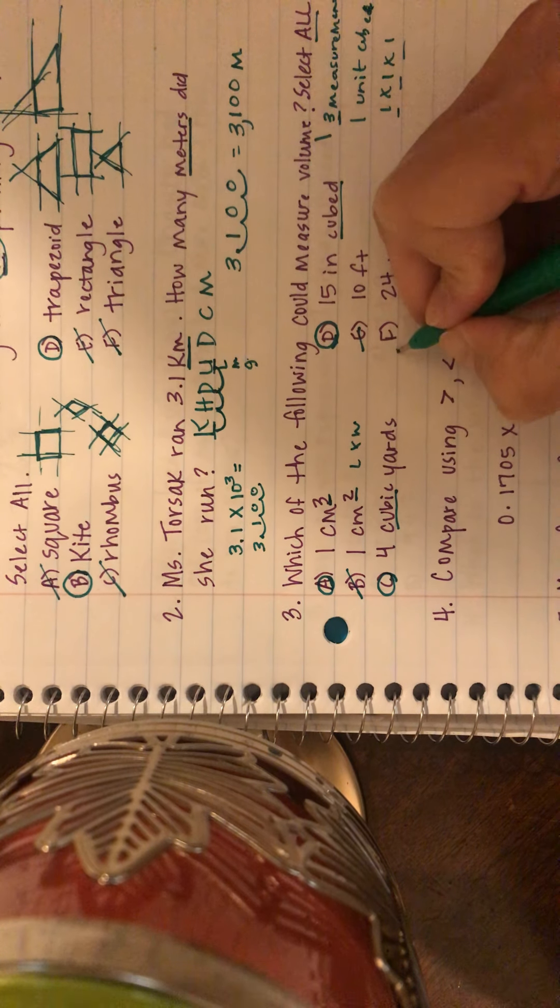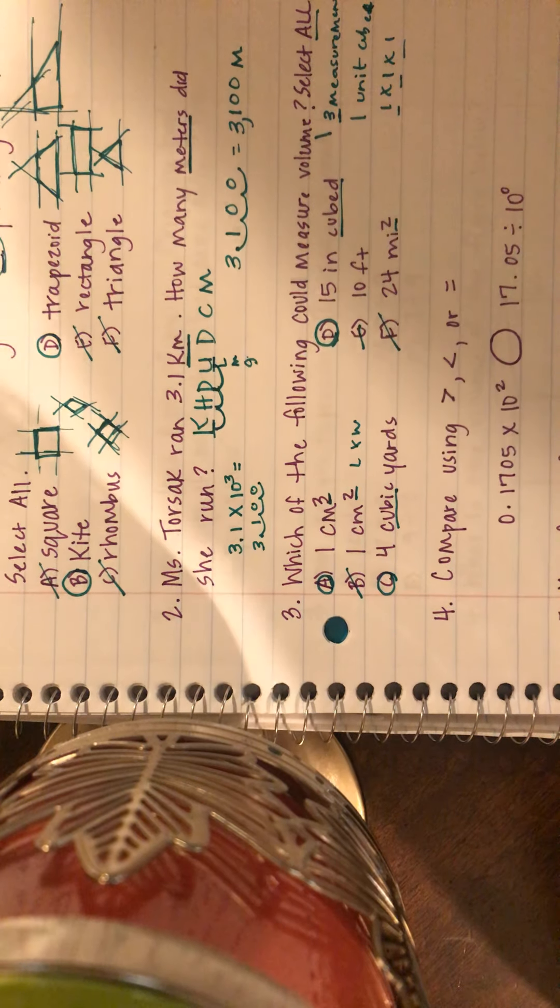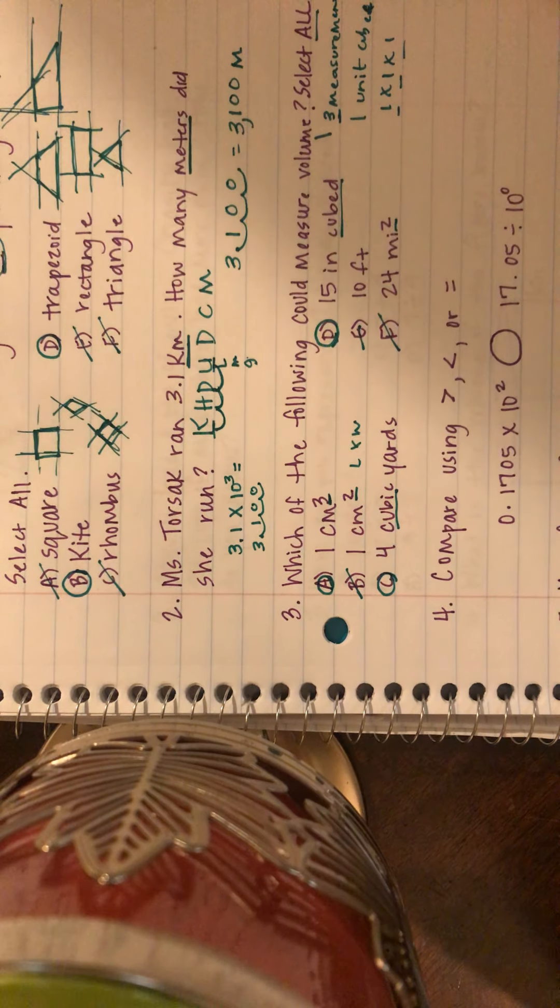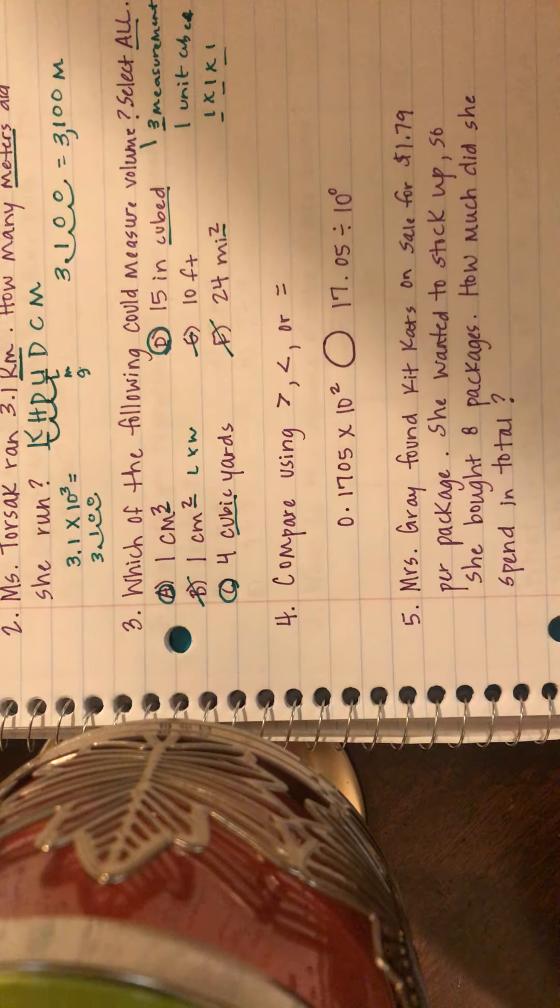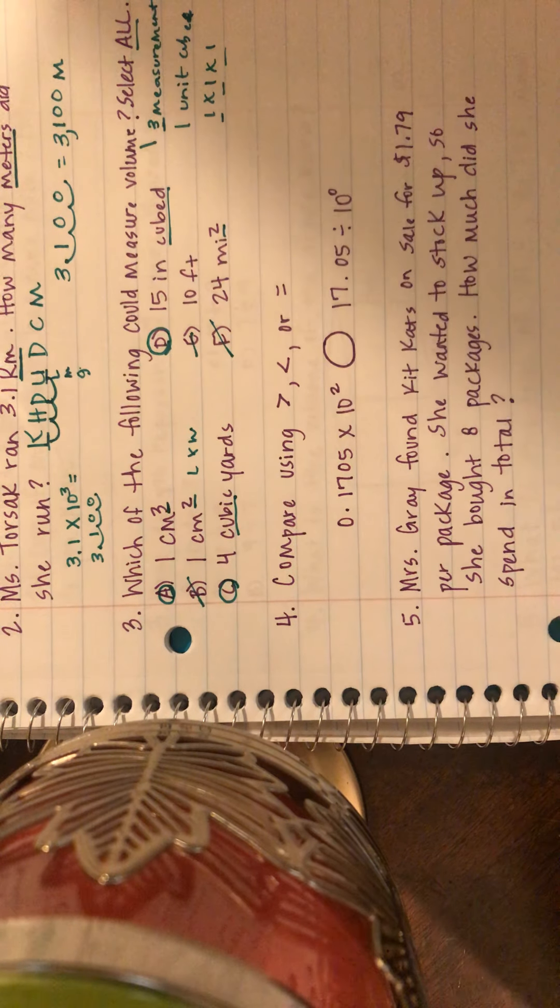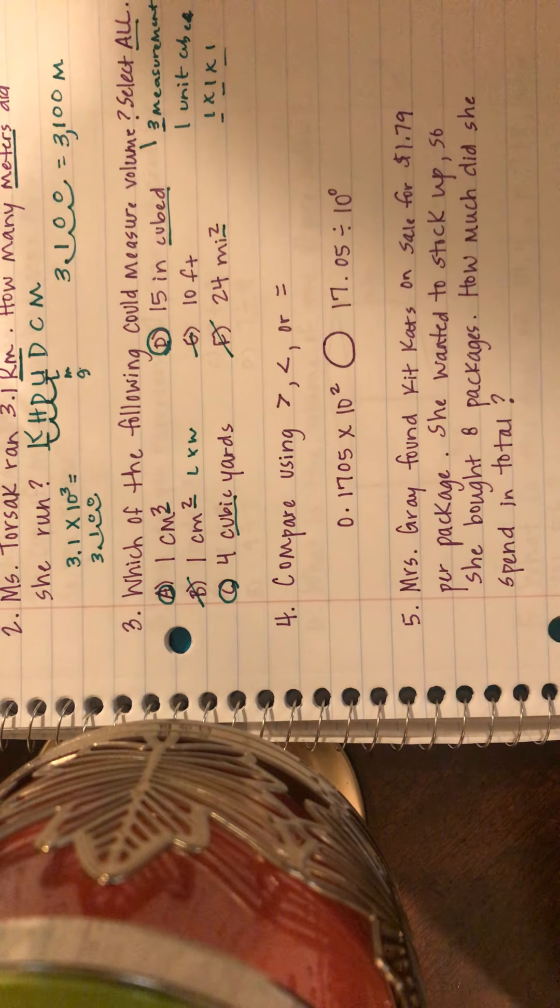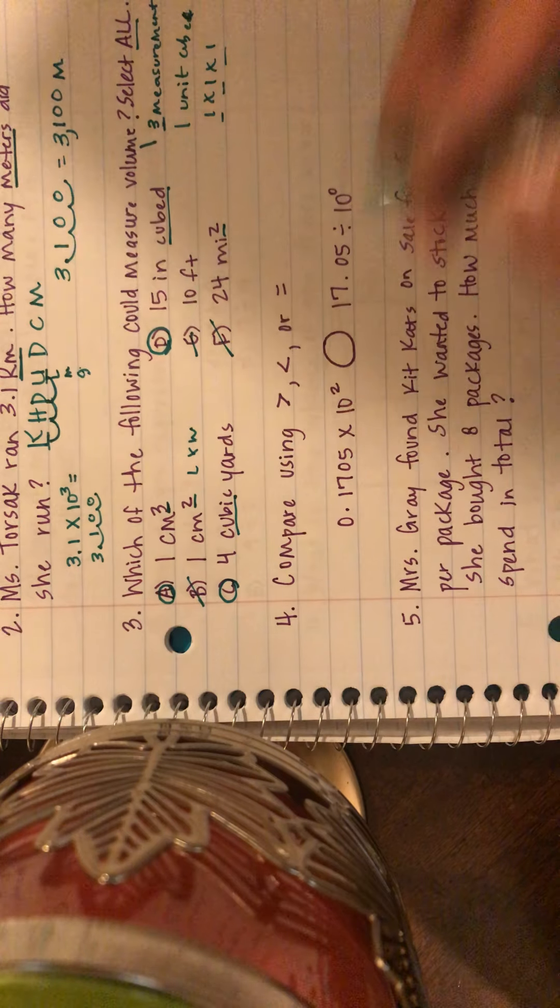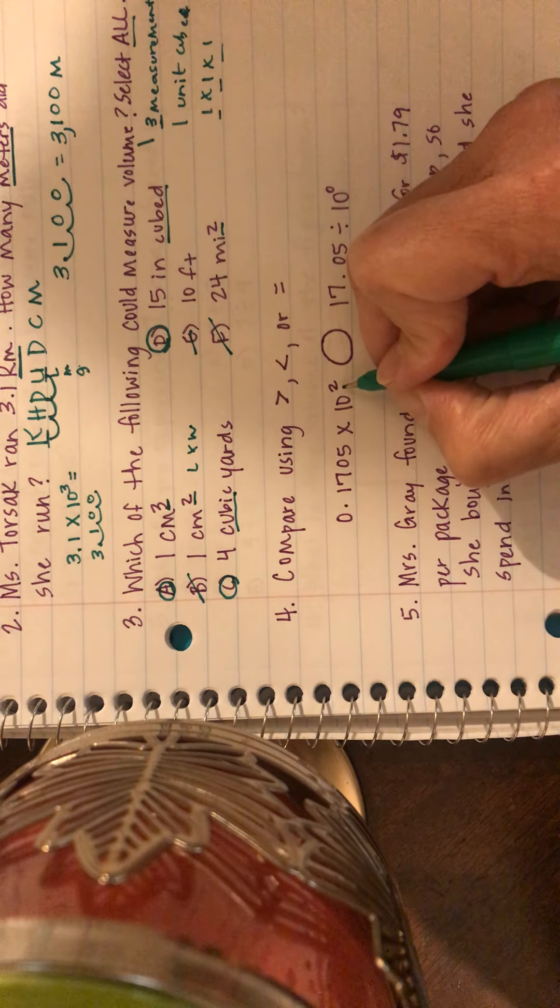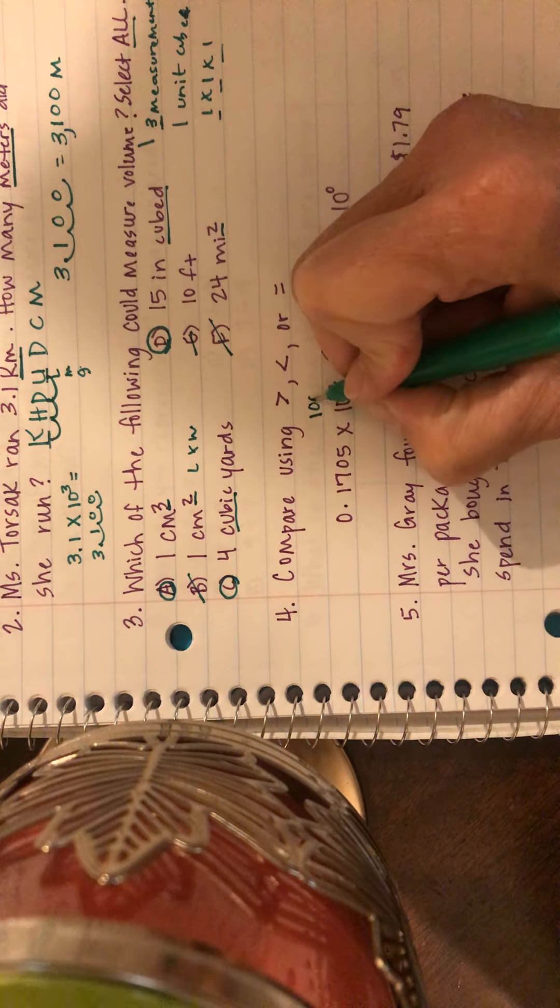Alright, when we're comparing using greater than, less than, or equal to, I have to solve both sides before I can put my symbol in there. So if I'm multiplying by 10 to the second power, I know that that means that that's two zeros, okay, that's multiplying it by 100. Or I'm making two moves.